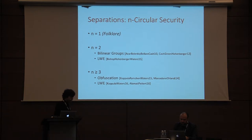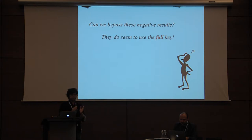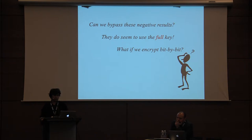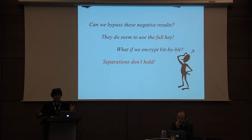You might still ask whether n-circular security is exactly what we want, or whether there is something that lets us bypass these results. All the separation results rely on one important fact: the message contains the entire secret key when you try to encrypt it. So a natural idea is: what if we consider only bit encryption — encrypting all bits separately, just bit by bit? It seems that all the separations, including the folklore result, don't apply to bit encryption. So we don't know if circular security and n-CPA semantic security are separate in the case of bit encryption.